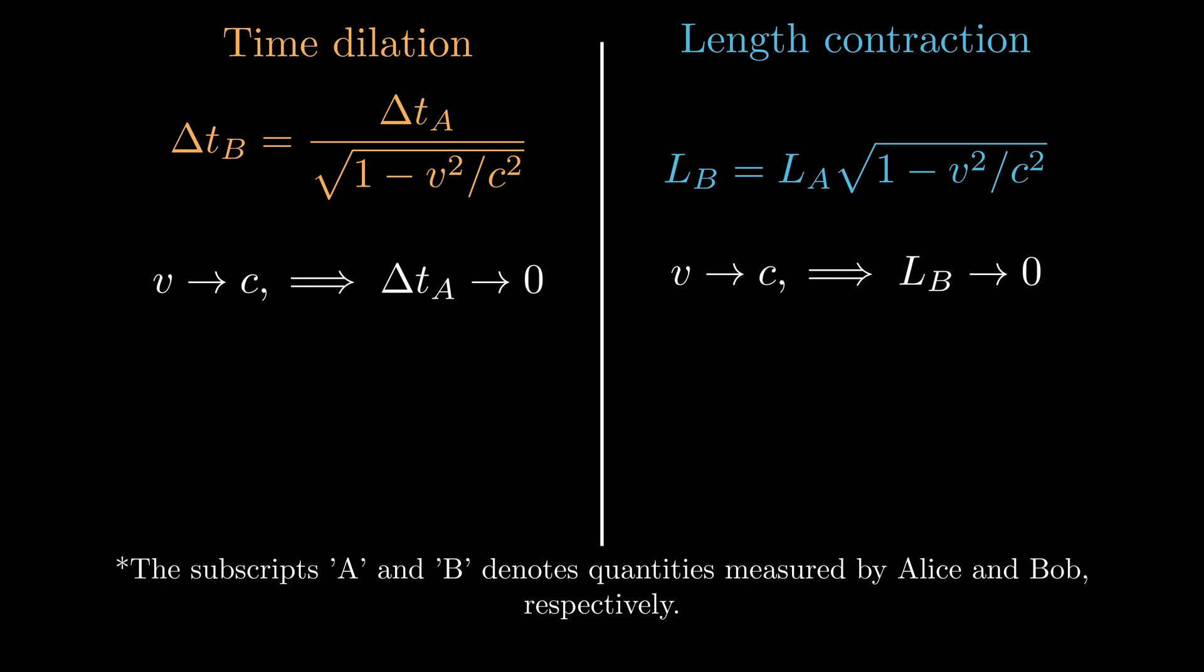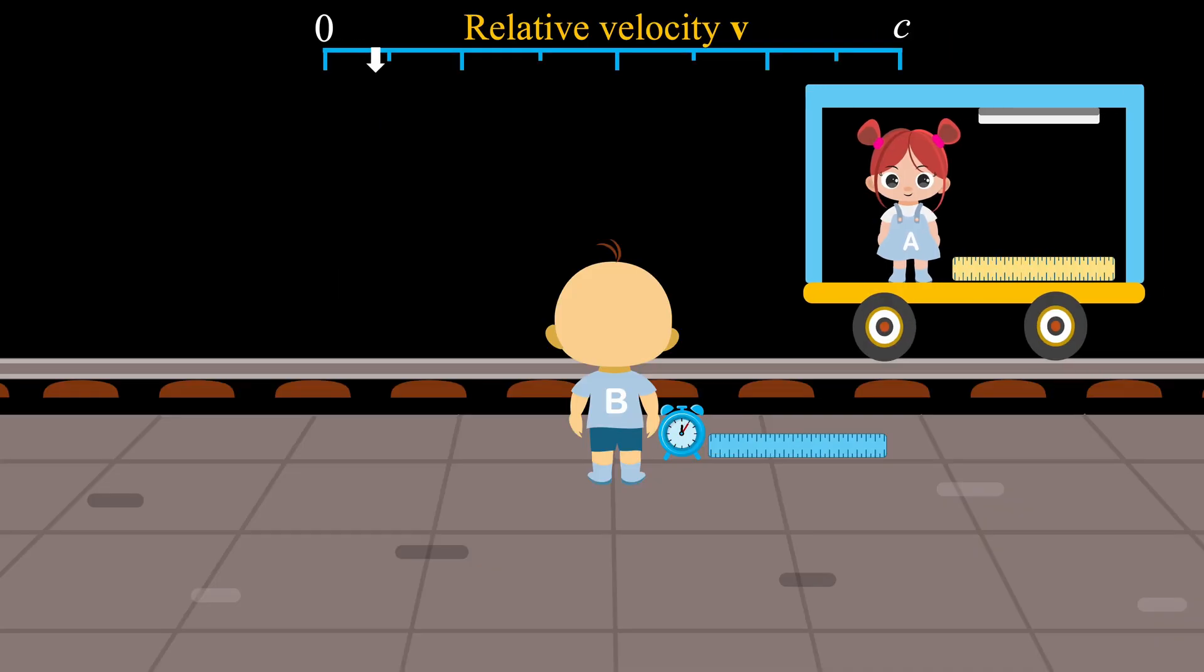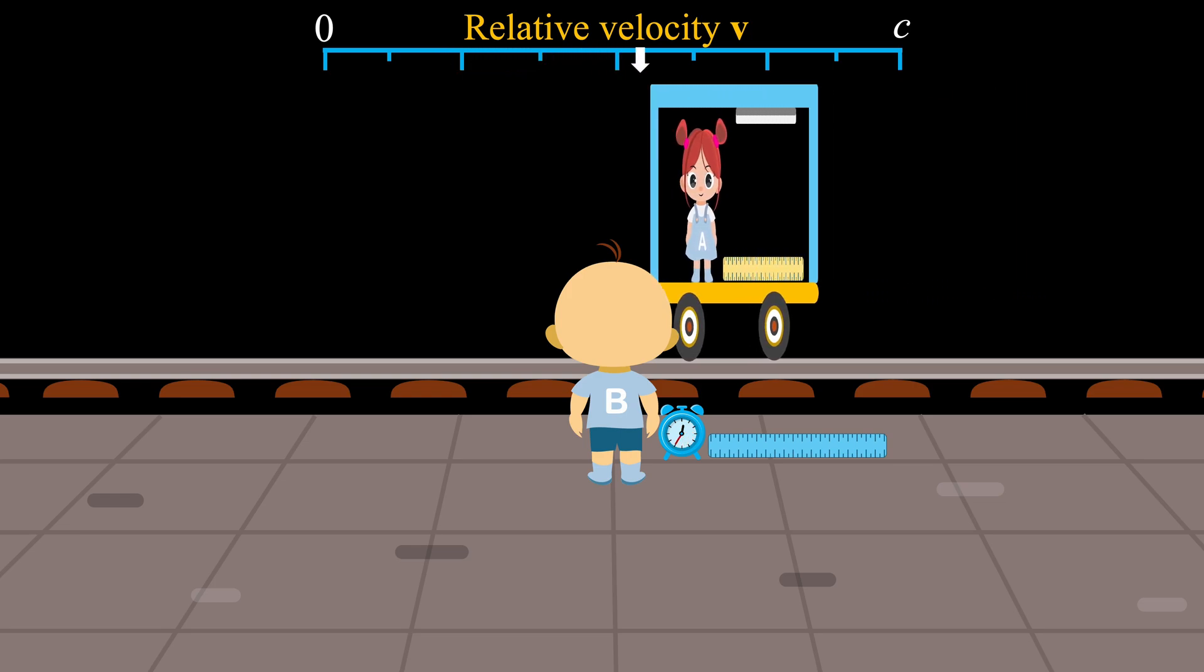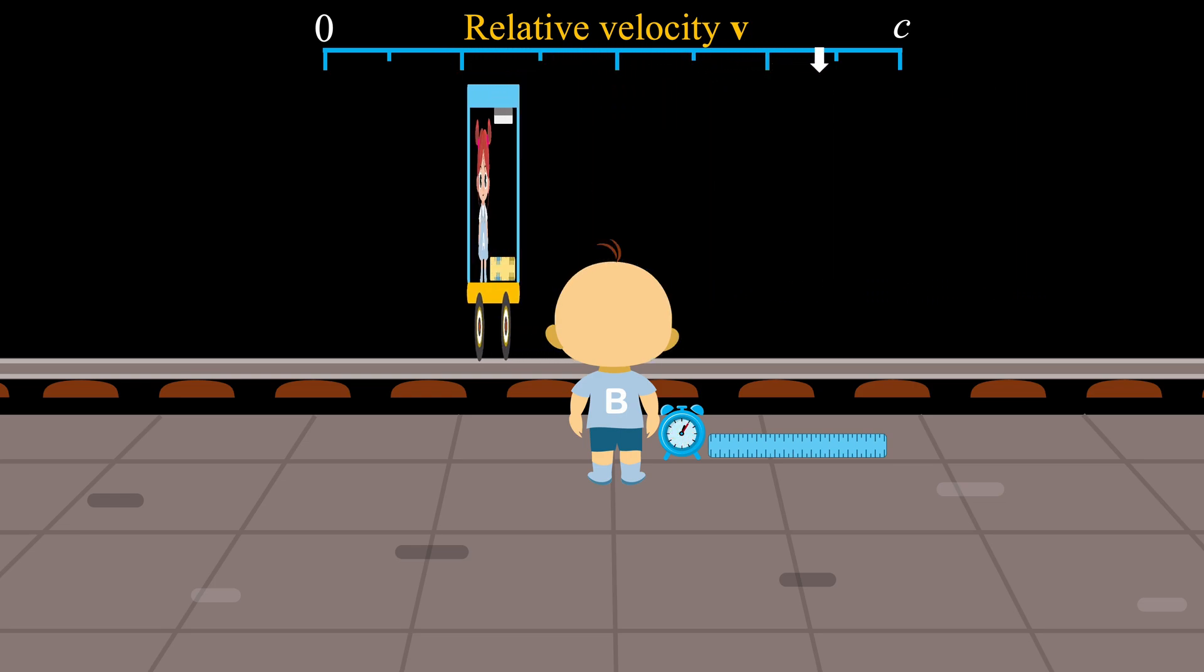Thus, at the speed of light relative to an observer, a three-dimensional object like the train would become two-dimensional with no volume and frozen in time. However, these are impossible for anything with mass, as such objects must have finite volume and an internal clock that ticks.